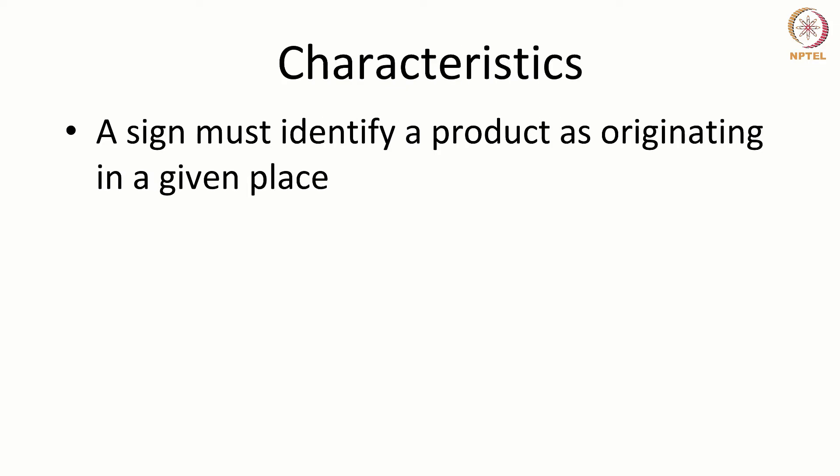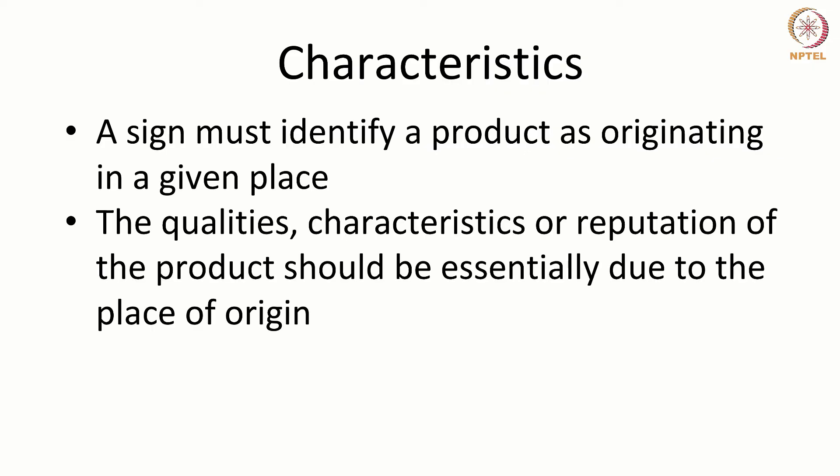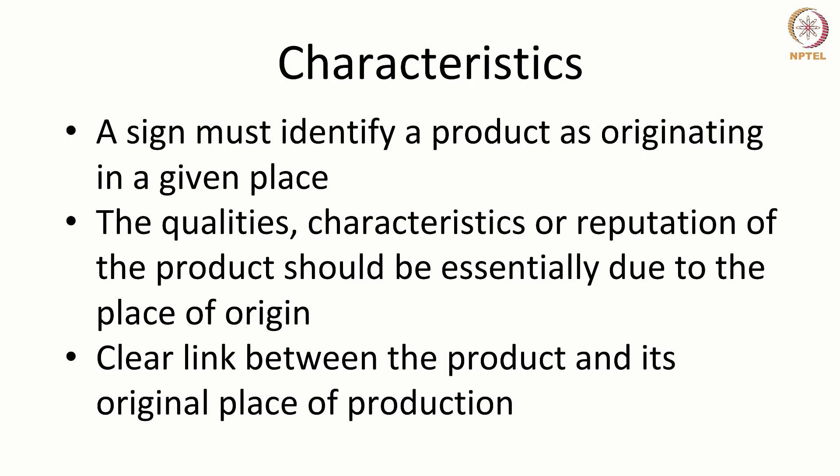The characteristics of a GI are that a sign must identify a product as originating in a given place. The qualities, characteristics, or reputation of that product should be essentially due to the place of origin, and there has to be a clear link between the product and its original place of production.